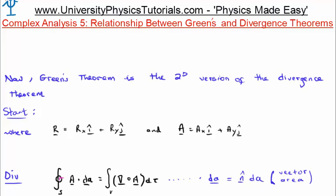In this video I'd like to continue on with my tutorials discussing complex analysis. Specifically this is video number 5 and I'm going to discuss the relationship between Green's theorem and the divergence theorem. I'd like to draw your attention to my website universityphysicstutorials.com, where I have all my videos archived and listed and have other bits and pieces which may be of interest to you.